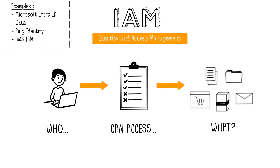IAM stands for Identity and Access Management. Simply put, IAM allows controlling who accesses what and how, while limiting unauthorized access. IAM refers to the set of tools and processes for verifying users' identities and authorizing their access to defined resources, such as applications, tools, and data, as well as the possible actions on these resources.